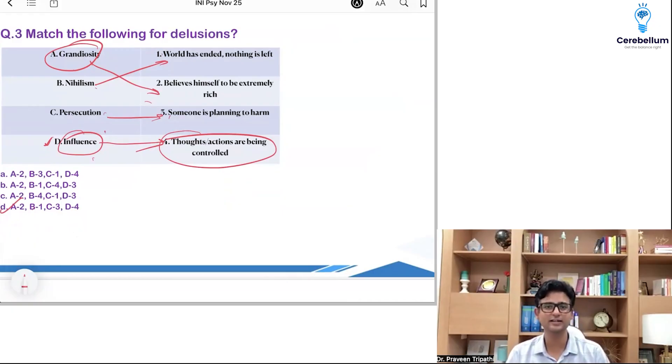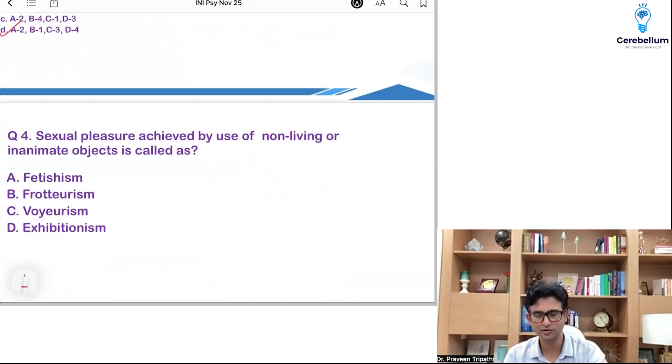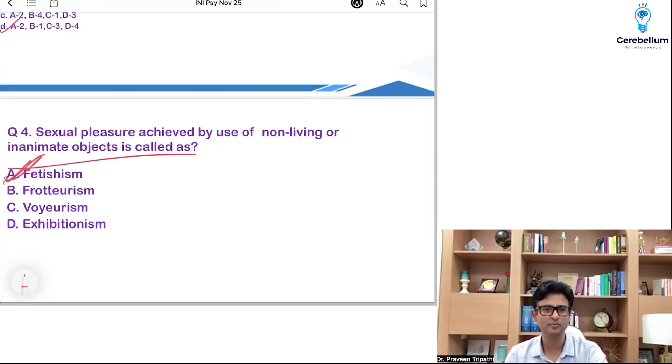I'm pretty happy. First, second, third question are from marathon also. Forget about the quick revision video or the mission videos. In the last one and a half hours, we discuss all these topics. So, this one also covered in forensic in marathon. A straightforward question. Sexual pleasure achieved by use of non-living or inanimate object is called as fetishism. I'm pretty sure most of you got it right. Fraterism is about touching. Voyeurism is about peeping tom. Exhibitionism is about exposing yourself. And this is fetishism. I'm sure most of you got it right.